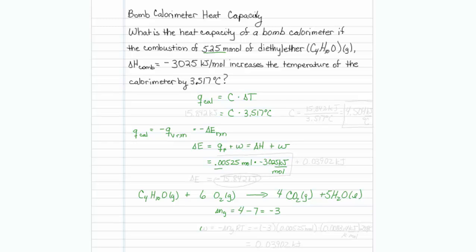So my work is going to be minus delta NG RT, so it's going to be equal to my minus a minus 3 times how many moles I have in the reaction. It's minus 3 moles of gas per 1 mole of diethyl ether, but I don't have 1 mole. I have 0.00525 moles of diethyl ether,